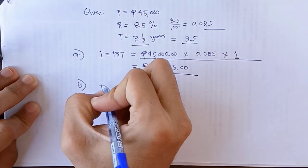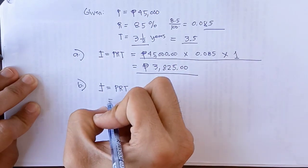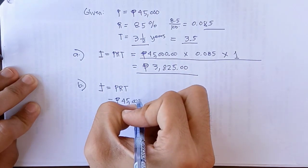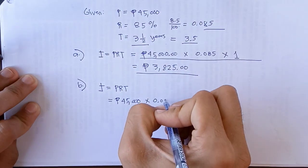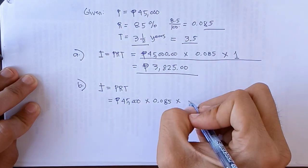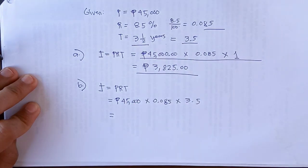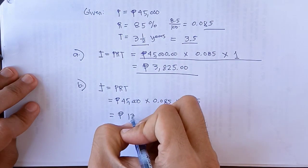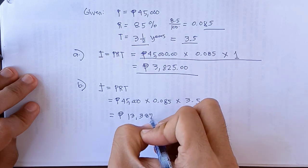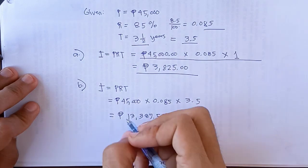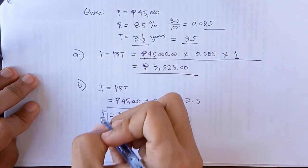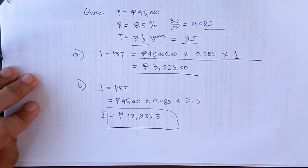So same formula, I = P × R × T. So this is equal to 45,000 times 0.085 times 3.5, and we will get 13,387.5. So this is now our total simple interest for three and one-half years that is charged at 8.5% of a loan of 45,000.